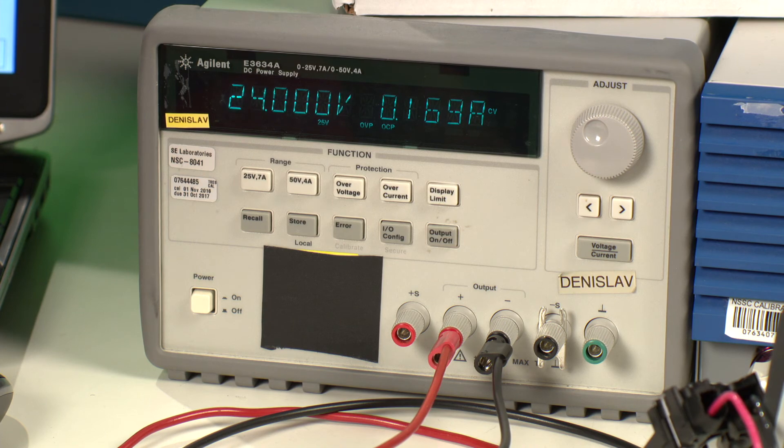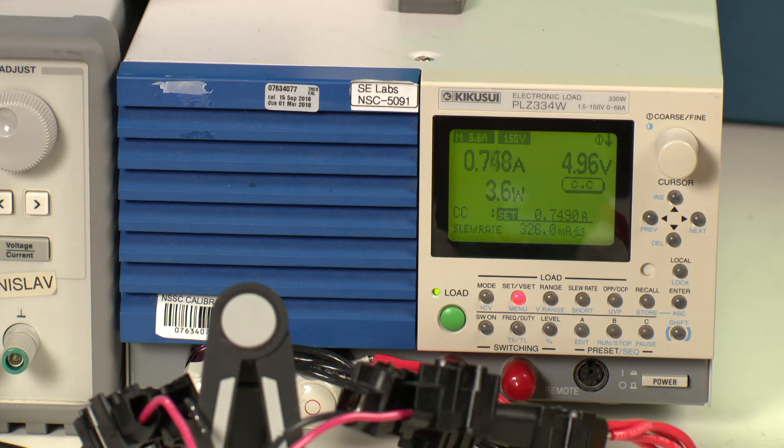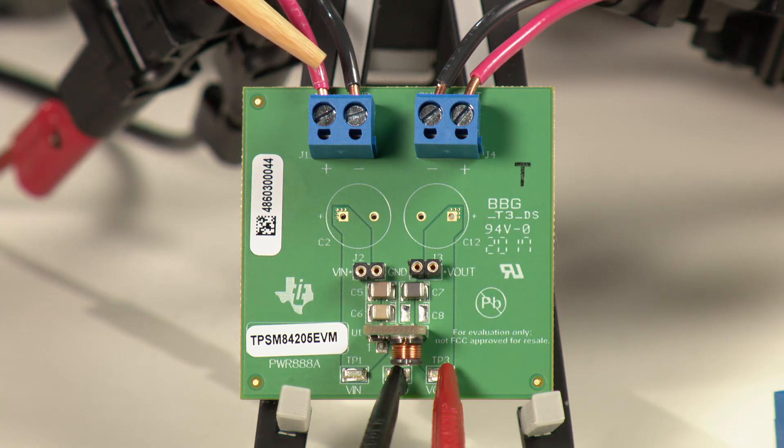So I have an input supply connected and a load connected to the EVM already. The input voltage is connected to the input terminal block and the load is connected to the output terminal block.